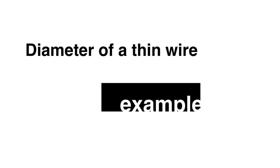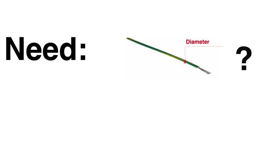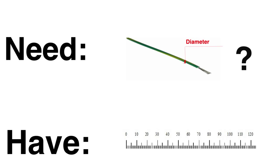Let us assume that it is necessary to measure the diameter of very thin wire. The wire is very thin — like, I don't know, 100 microns or about this — but you have to know how many exactly. And what you have is a regular rule, a scale like this.